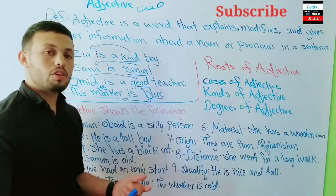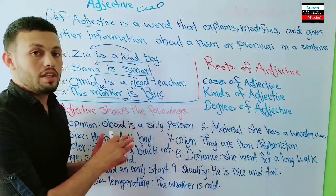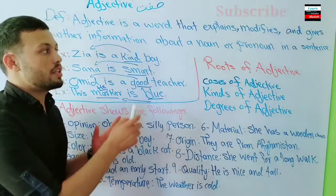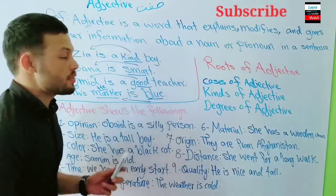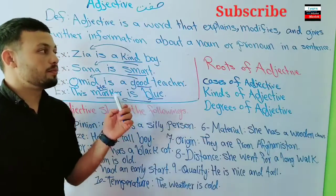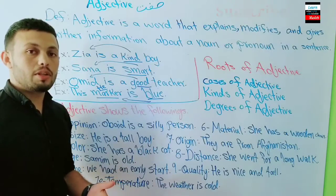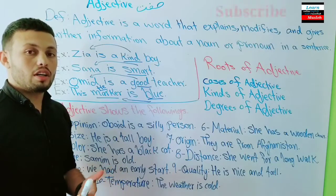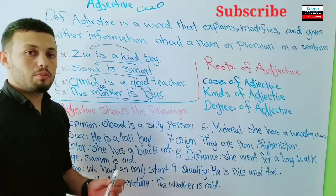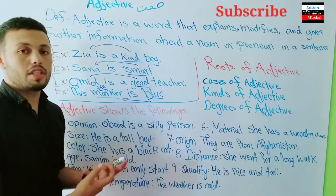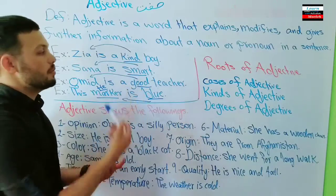When we say 'They are intelligent,' the adjective 'intelligent' is describing the pronoun 'they.' Similarly, 'He is nice' — here 'nice' is the adjective modifying the pronoun 'he.' So adjectives can describe both nouns and pronouns.